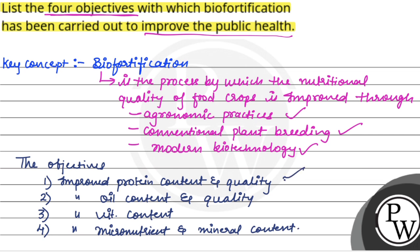So the four objectives are: improved protein content and quality, improved oil content and quality, improved vitamin content, and improved micronutrient and mineral content — through biofortification of food crops, by the help of agronomic practices, conventional plant breeding, and modern technology. I hope you understood it. Best of luck.